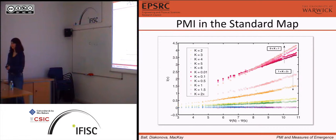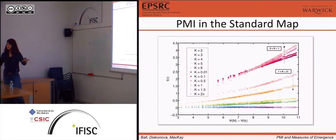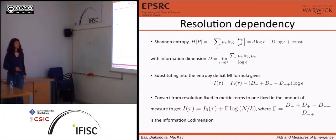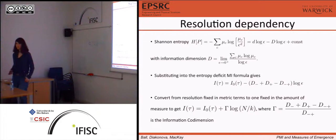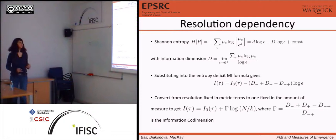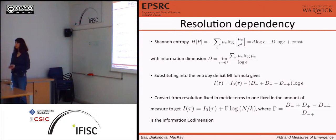This has to do with slow relaxation times and stickiness — all these phenomena that happen when tori break down and become cantori. When these are more or less out of the way, then with increased non-linearity, you know less and less. We can interpret the resolution dependency of PMI through the information dimensions of the underlying spaces.